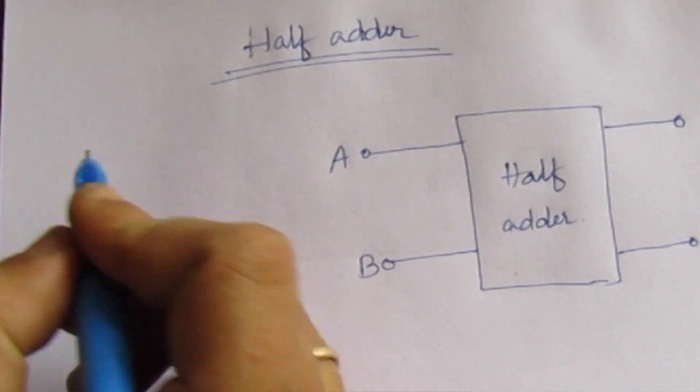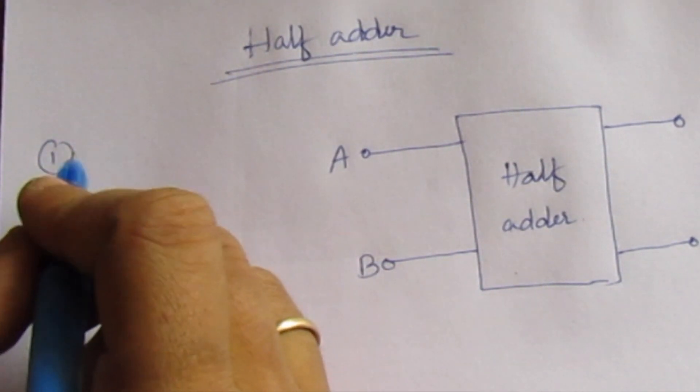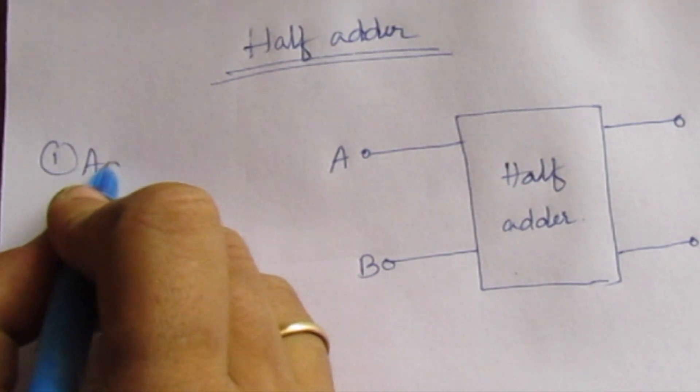We need to consider two points while designing a half adder. The first is, it adds two single-bit numbers.